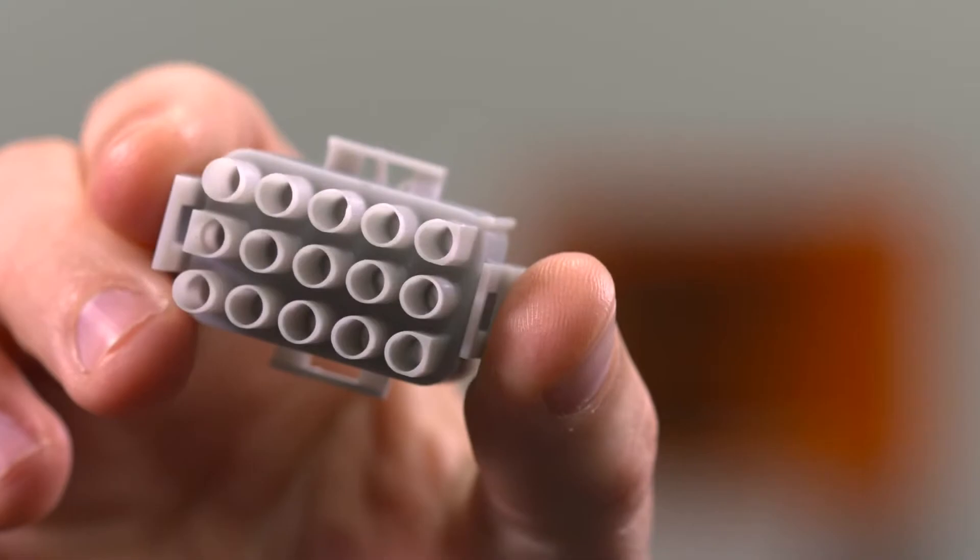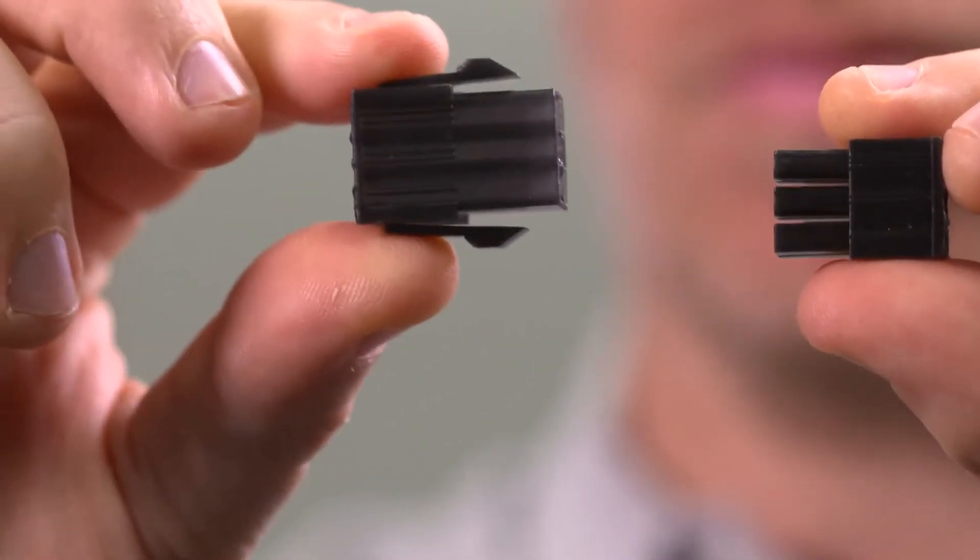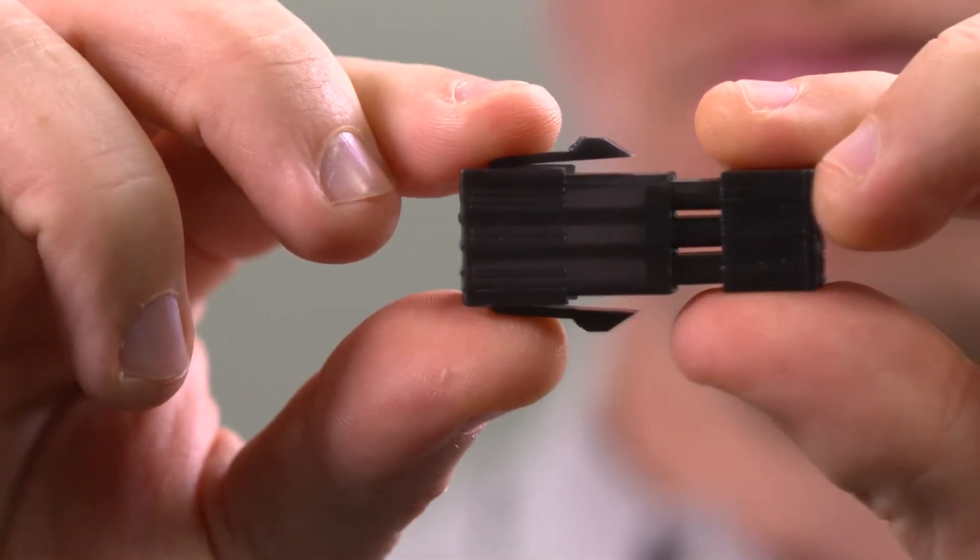For electronics and consumer goods, Figure 4 is ideal for prototyping electronic connectors with durable snap fits, clips and fasteners.